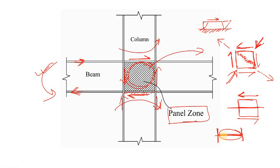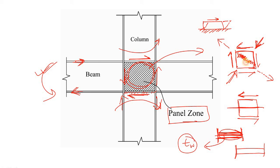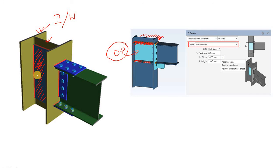If the web thickness is insufficient, it will definitely fail. So what you need to do is add some extra plate — the doubler plate — welded to the web. If one side is not enough, you add it on both sides, increasing the effective web thickness. This allows the web to resist the buckling effect as well as carry the shear force. That is the reason the doubler plate is provided. Thanks for watching.